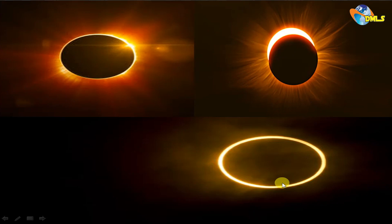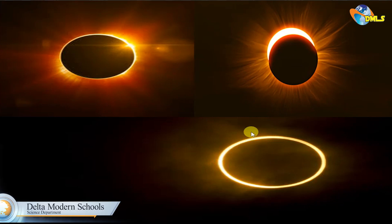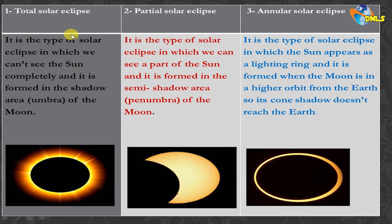If the position of the moon selects the type of solar eclipse, when the moon is far away from the Earth in the higher orbit, the antumbra is formed at the end of the umbra. In this case, you can see the sun as a glowing ring — and this is called the annular solar eclipse. So: the total solar eclipse is the type in which you cannot see the sun completely, and it is formed in the umbra shadow region. The partial solar eclipse is the type in which you can see part of the sun, and it is formed in the penumbra semi-shadow region. The annular solar eclipse is the type in which the sun appears as a glowing ring, and it is formed when the moon is in a higher orbit from the Earth and its cone shadow doesn't reach the Earth.